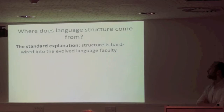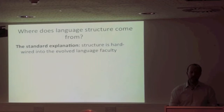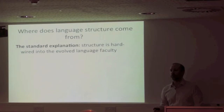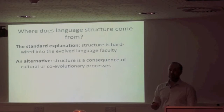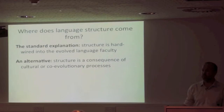The idea behind the standard explanation is that structural properties of language — duality of patterning, phonemic coding, compositional syntax — are hardwired into an evolved language faculty. Having those features makes language useful for communication, so those features are a reflection of some evolved piece of biological equipment that's evolved in humans and no other species. The alternative I'll argue for today is that at least some aspects of linguistic structure are best explained as a consequence of cultural evolutionary processes, or co-evolutionary processes where genes and culture co-evolve.